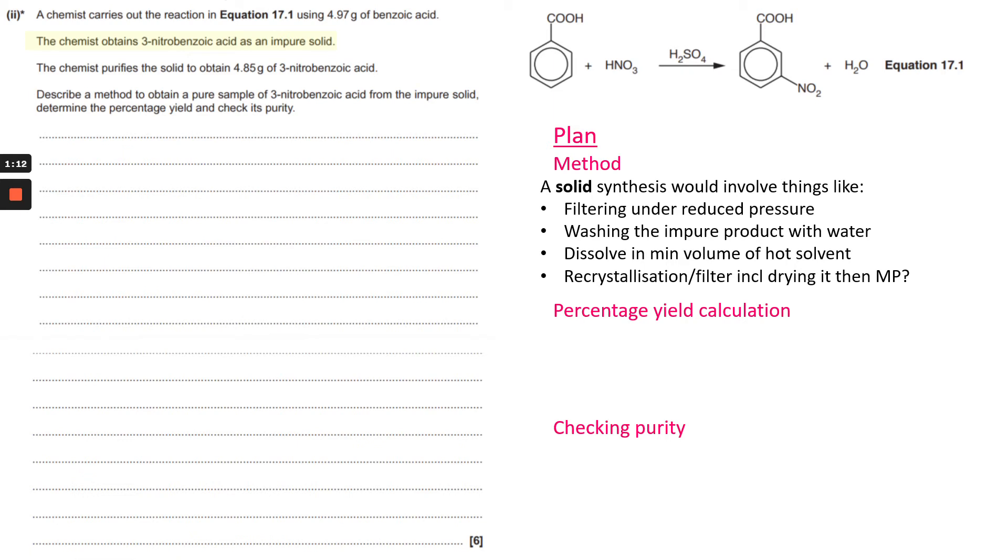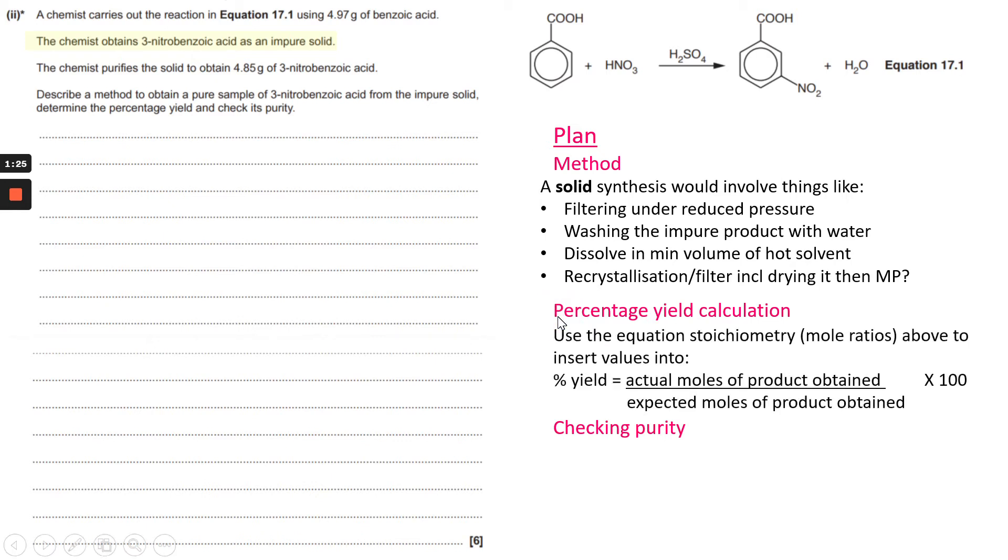Dissolving in a minimum solid volume of hot solvent, and then after that recrystallizing and filtering, including drying it before checking its melting point. The percentage yield calculation would need to use the equation stoichiometry.